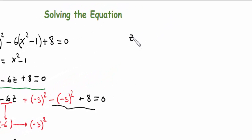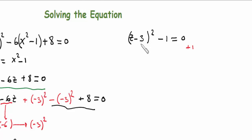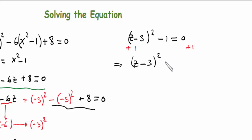We add 1 to both sides, giving (z minus 3) squared equals 1. Taking the square root of both sides, we get z minus 3 equals plus or minus 1.